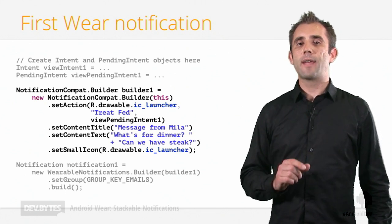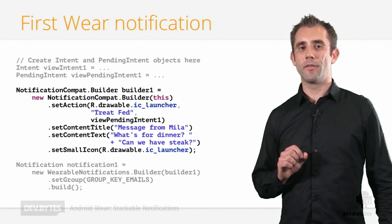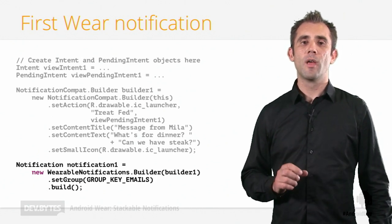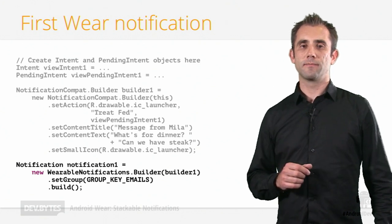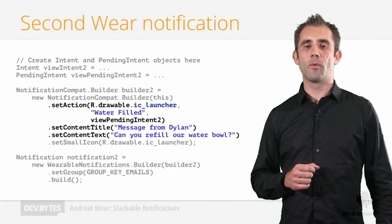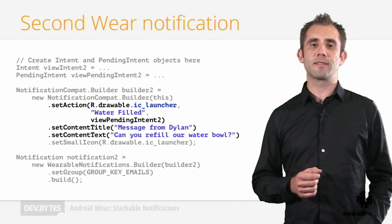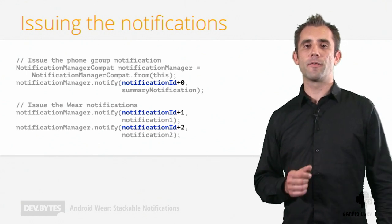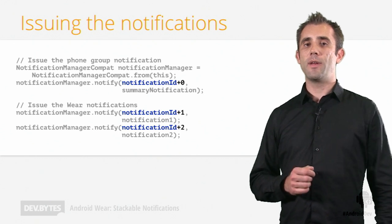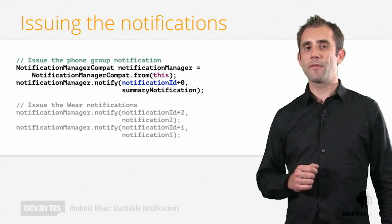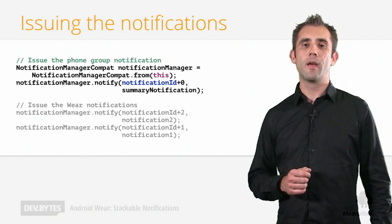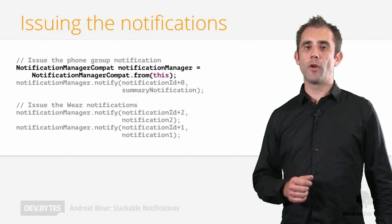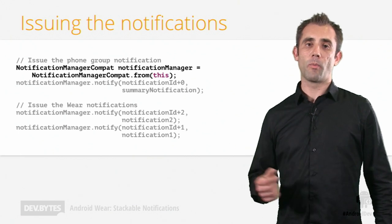We use the call to set action to indicate an intent for when an action icon is touched on the wearable display. You then need to build the notification for the wearable with a call to set group, which puts it in the group specified previously with the string constant. This is the second notification that appears on the wearable — the code is basically the same except the message text and the action are different. Finally, we issue the notifications to Android so they appear on the phone and the wearable, issuing all three separately with unique ID numbers. This part of the code issues the group notification appearing on the phone and would probably already be in your existing code. Make sure you use NotificationManagerCompat instead of the NotificationManager from the framework when dealing with wearable devices. And now we can issue the notifications for the wearable device.